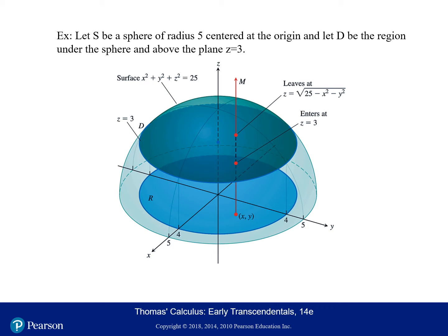The top surface is the equation of a sphere of radius 5. So the top boundary — if you solve for Z — is where you exit your region. If you draw a line from a point in the shadow upwards through your region, it exits at the sphere, so you solve the sphere equation for Z. You enter this region at the bottom boundary, the plane Z equals 3. So the Z limits of integration are from 3 to the square root of 25 minus X squared minus Y squared.